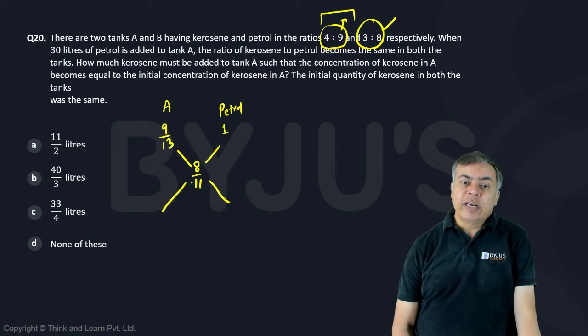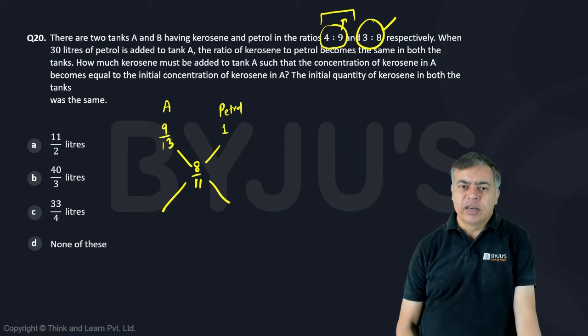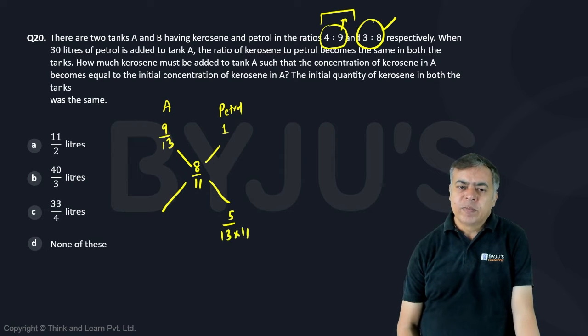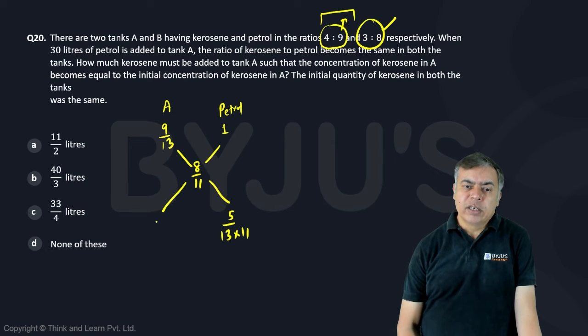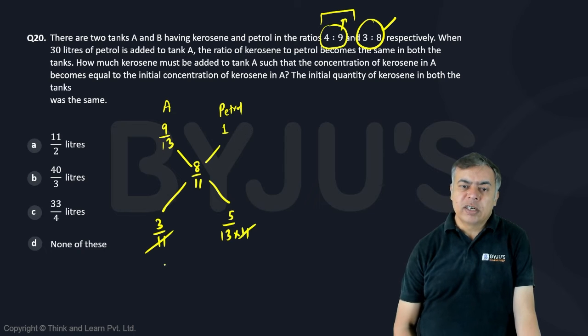So here if I take cross differences, I am applying allegation here. So 9 by 13 to 8 by 11, so it is 5 divided by 13 into 11. Here it is 11 minus 8, 3 by 11. So 11 cancelled, so it is 39 is to 5.